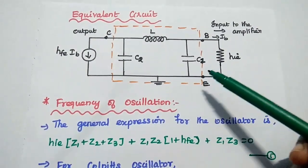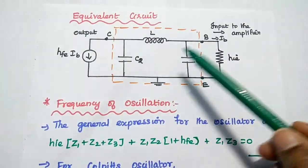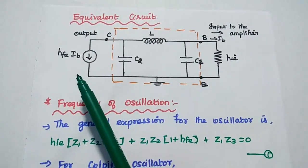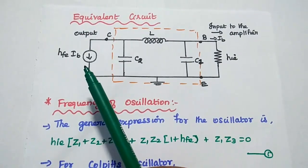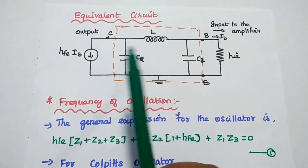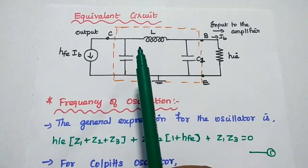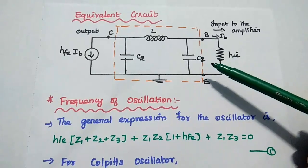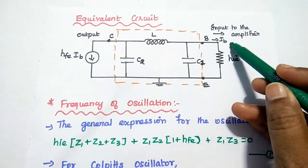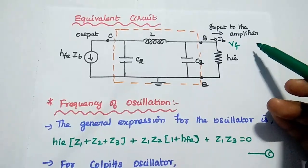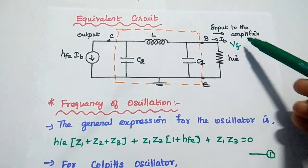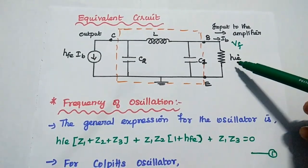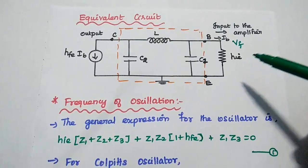This is the equivalent circuit of the Colpitts oscillator. The feedback network consists of C1, C2, and one inductor. The output of the amplifier, HFE·IB, is taken as input to the feedback network across C2. The feedback signal VEF, which is the input to the amplifier, is taken across base and emitter. HFE represents the input impedance of the amplifier.